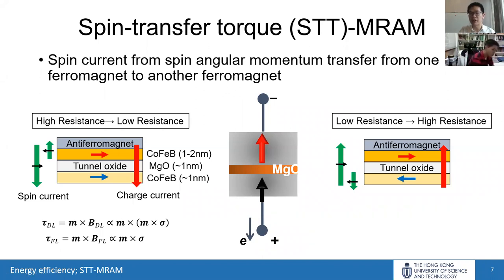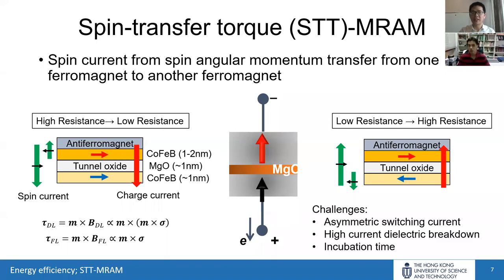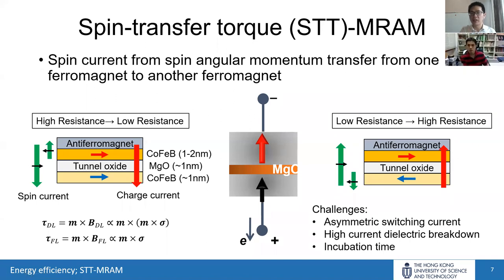We note three important challenges for STT-MRAM. First, the switching is asymmetrical — switching from high- to low-resistance state uses transmitted spin current, while switching from low to high uses reflected spin current, making circuit design challenging. Second, the high current causes dielectric breakdown of the tunnel oxide, such as MgO, which is only one element thick. Third, there is the incubation time problem: the damping-like torque is proportional to M cross (M cross sigma), which is initially zero when collinear, so thermal excitation must first tilt the free layer magnetization to initiate switching.